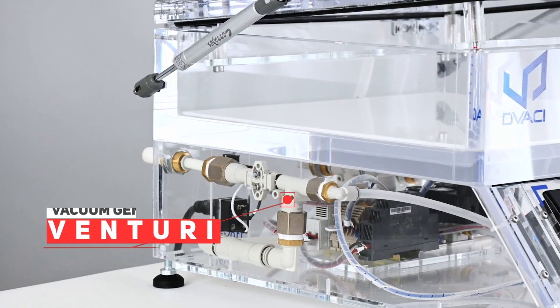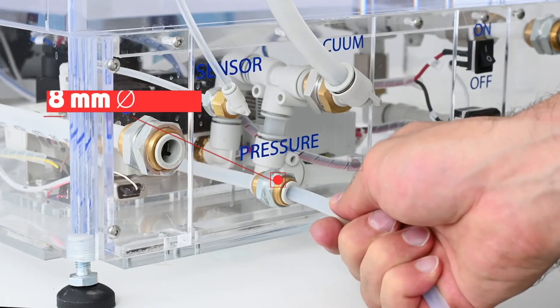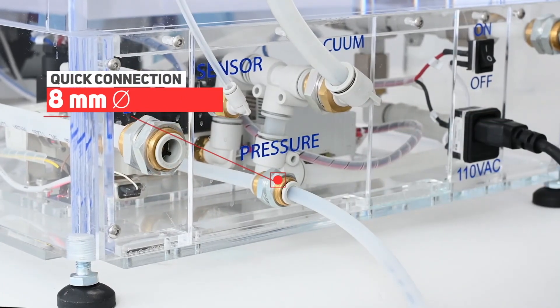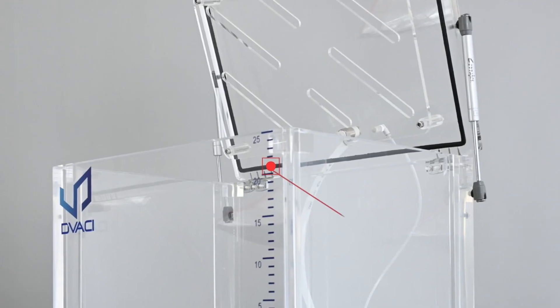The vacuum is generated through an integrated Venturi system, which requires a compressed air supply to operate. Connections are located on the back of the tester, which facilitates organization of hoses and wiring.